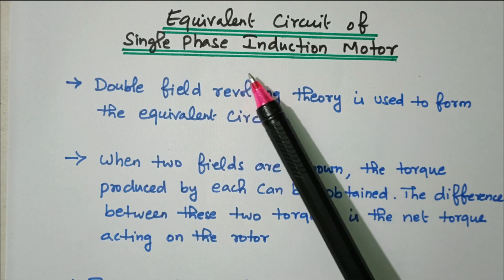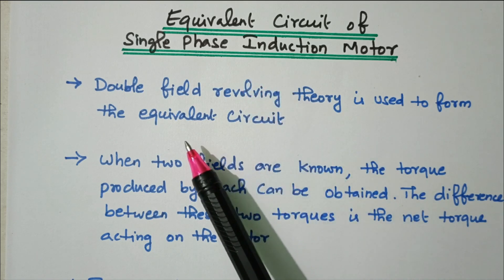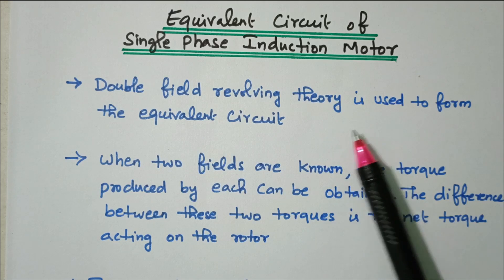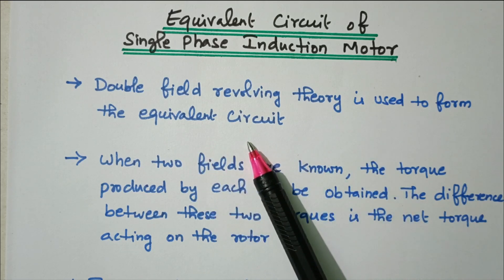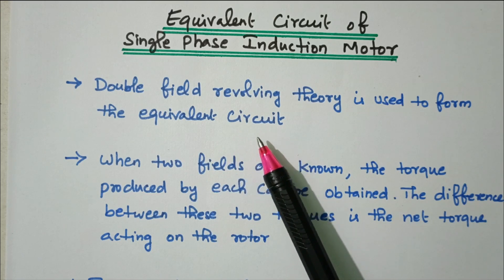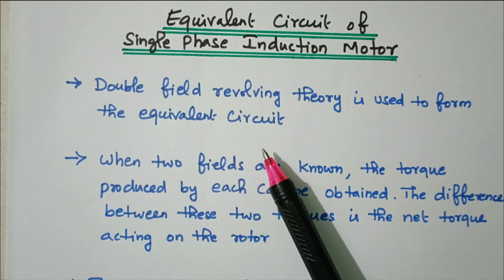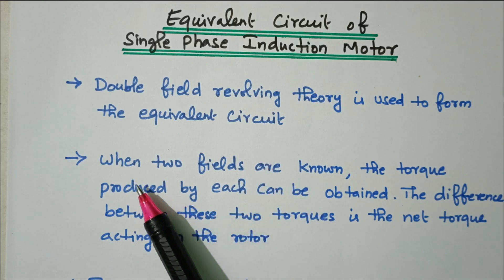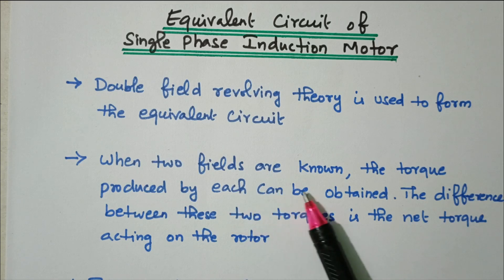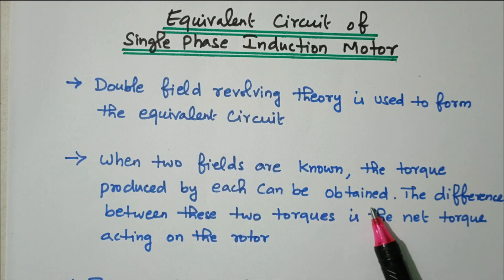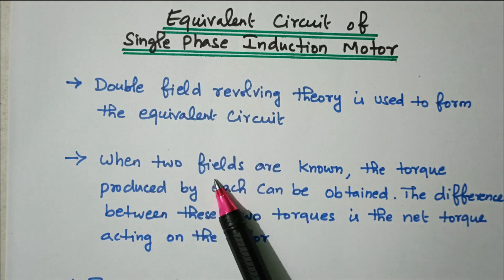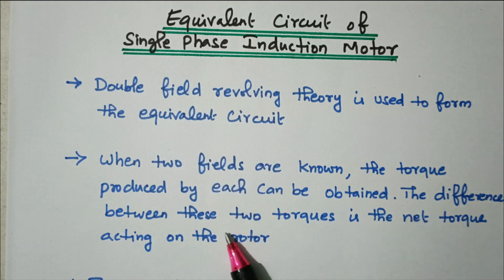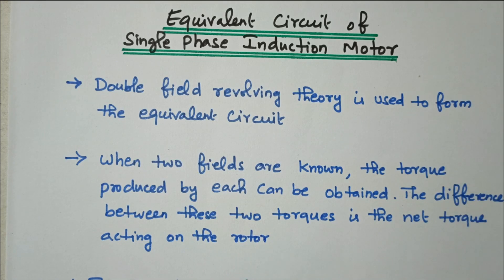Now we'll go to the topic: single phase induction motor equivalent circuit. The double field revolving theory is used to form the equivalent circuit. A separate video on the double field revolving theory is available; the link is given in the description box. According to this theory, when two fields are known, the torque produced by each can be obtained. The difference between these two torques is the net torque acting on the rotor.